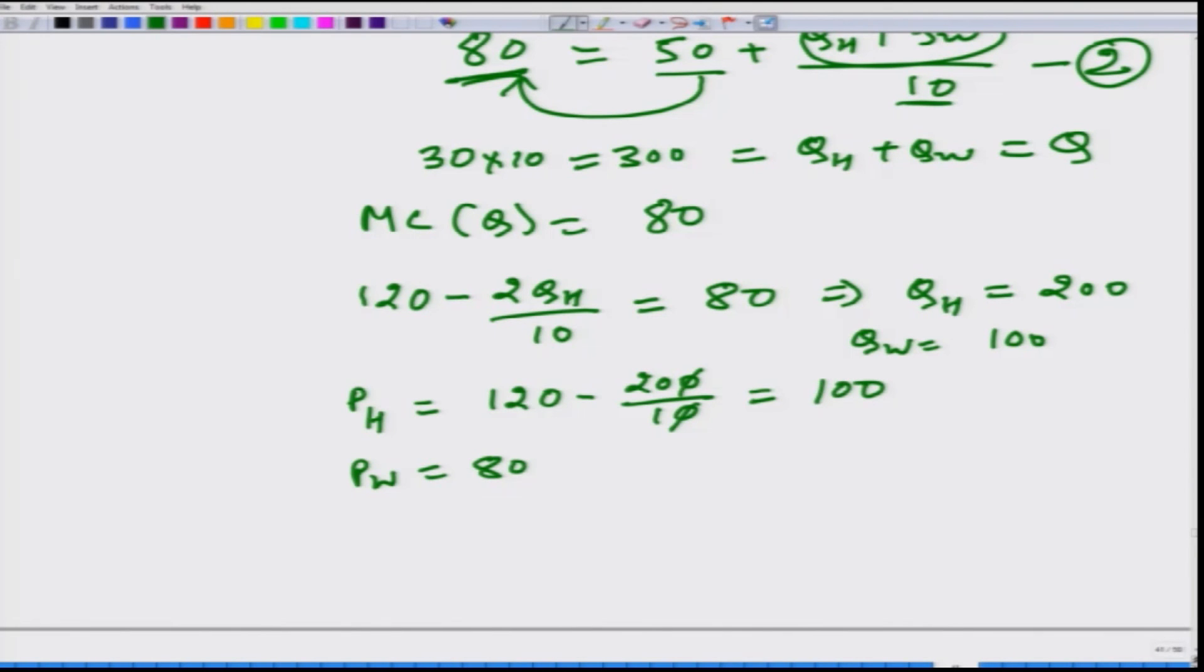Remember that we had derived that the market which has more elastic demand curve for the firm will have the lower price. This is what we get: PW is 80 while PH is 100. This is just an example numerical example to know how to calculate the firm's output and firm's prices when the firm is operating in more than one market. Thank you.